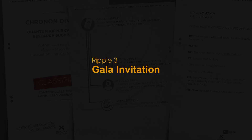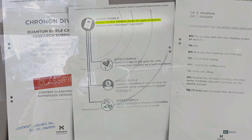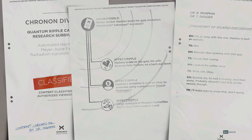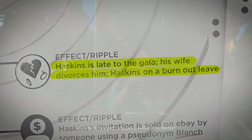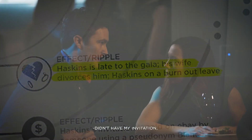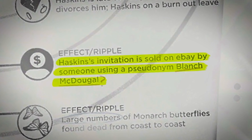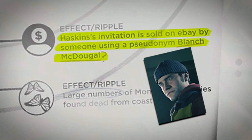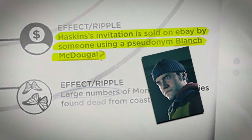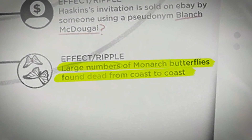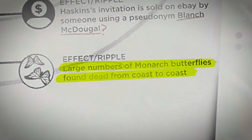Ripple 3: Gala Invitation. Nature of pebble: Jack knocks senior broker Haskins' gala invitation into the trash can. Two ripples from this pebble are easy enough to understand. As a result of the invitation never being delivered, Haskins shows up to the party late, his wife is furious, and this is the last straw that led to their divorce. Later, the missing invitation was sold on eBay by Blanche McDougal — a pseudonym used by Nick Marsters. Since he was in the area, it is likely Nick found this in the trash and decided to make some money off it. The difficult ripple involves monarch butterflies dropping dead all over the country — no matter how long I look at this, I can't figure out how the pebble created this ripple.